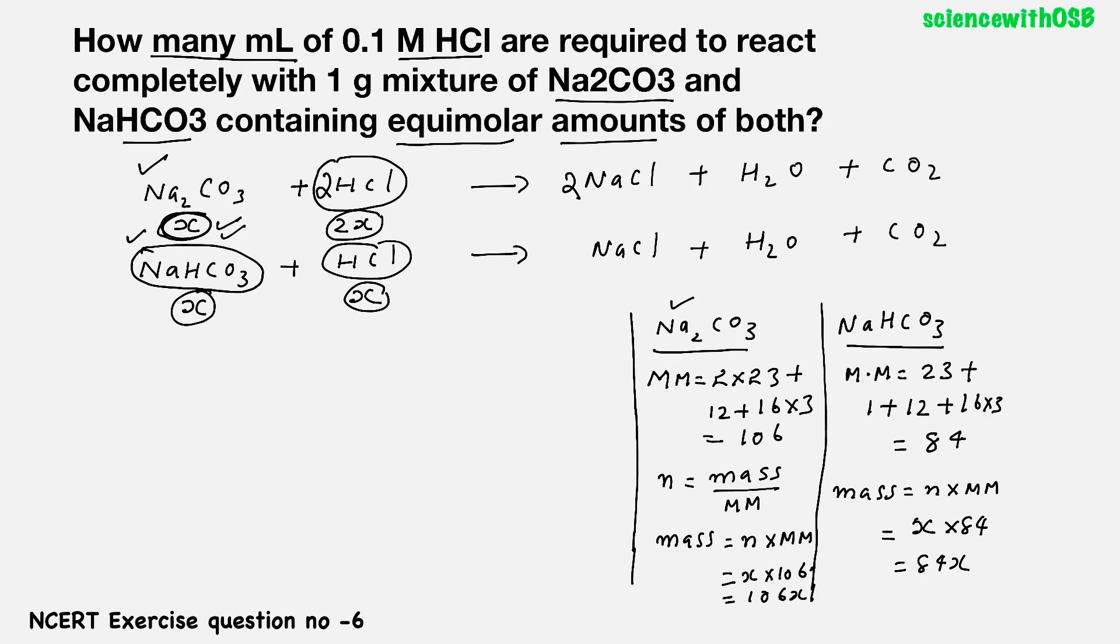Now, as per the question, what is the total mass of the mixture? It is 1 gram. What is the meaning of that? The mass of Na2CO3 plus the mass of NaHCO3 is equal to 1. So on adding, you will be getting 190x. So what is x? x is 1 by 190. That is equal to 0.00526.